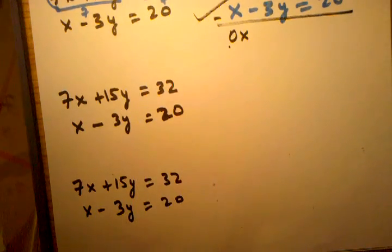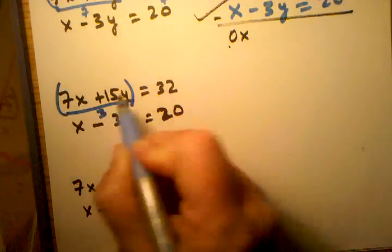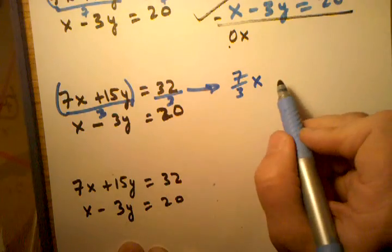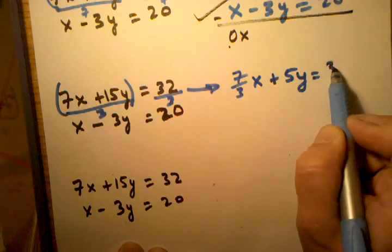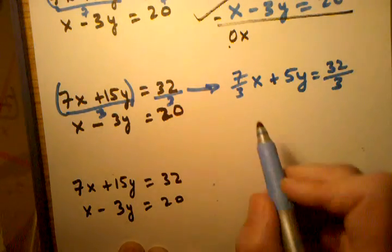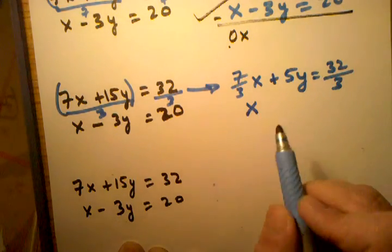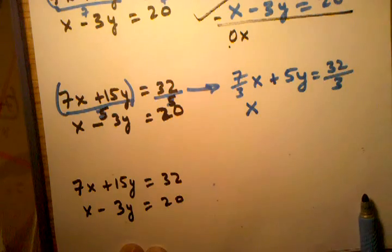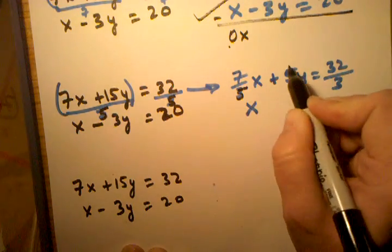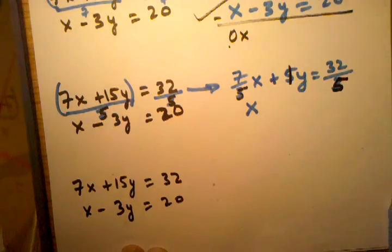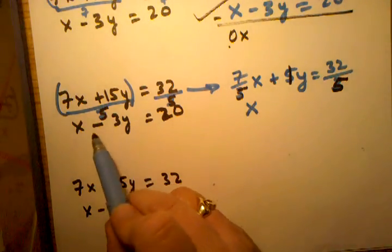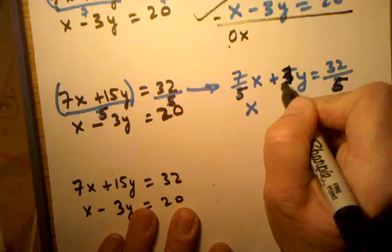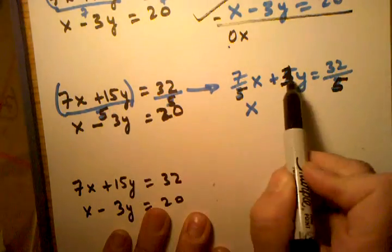I can divide both sides by 5 and if I do that I will end up with 7 fifths x plus y equals 32 fifths. Then I rewrite this equation over here I'll end up with x minus 3y which equals 20.